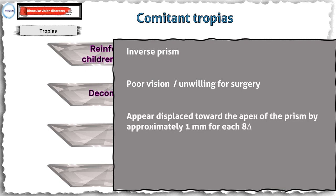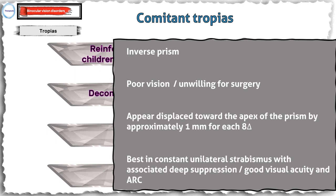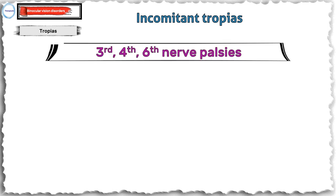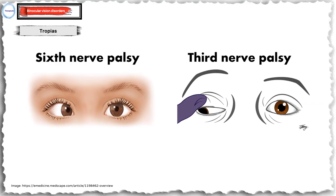An inverse prism causes the eye behind the prism to appear deviated towards the apex to an observer, approximately one millimeter for every 8 prism diopters. Patients having a constant unilateral strabismus with associated severe amblyopia or deep suppression, and those with good visual acuity but with anomalous correspondence, are the best candidates for this type of prism. Coming to incomitant tropia, some of the common conditions where prisms may be used to relieve diplopia are cranial nerve palsies causing extraocular muscle palsies. Since the vertical fusion amplitudes are low, under-correction — as is done with horizontal diplopia — should be minimal when using prisms in vertical diplopias, that is, fourth nerve palsy.